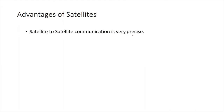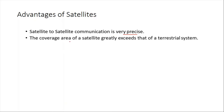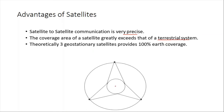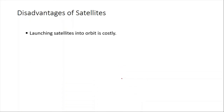The advantages of satellite communication include very wide coverage area compared to terrestrial systems. Theoretically, three geostationary satellites can provide 100 percent earth coverage. If you have three satellites each separated by 120 degrees in orbit, each one covers 120 degrees, so together they can send signals to the entire surface of the earth.